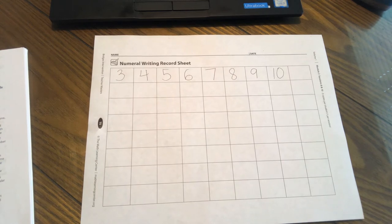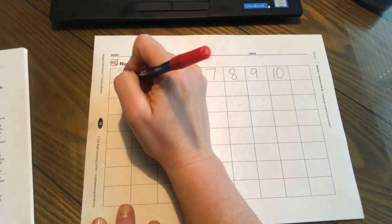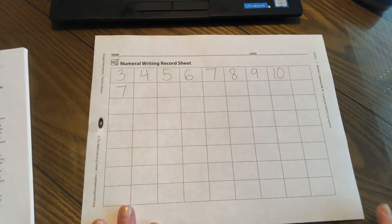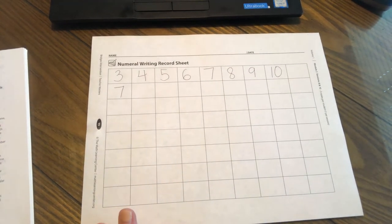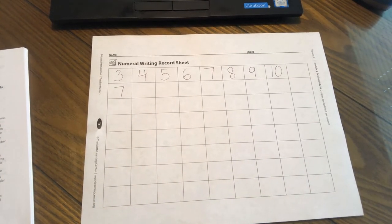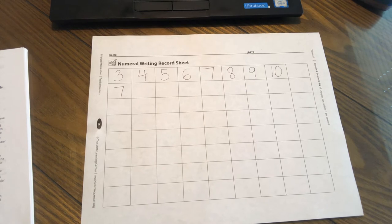All right, now boys and girls, I want us to start counting but this time we are going to start at seven and we are going to stop at 13. Are you ready? Here we go. Seven, eight, nine, 10, 11, 12, 13. Very good.